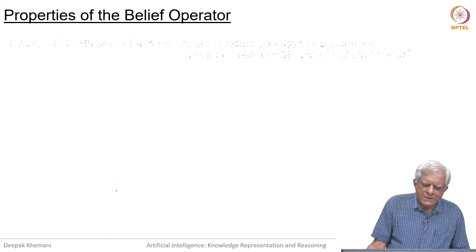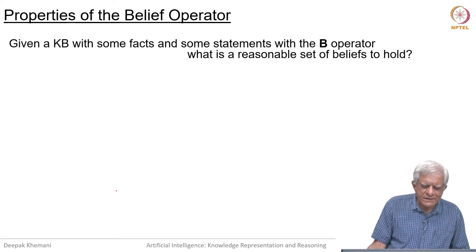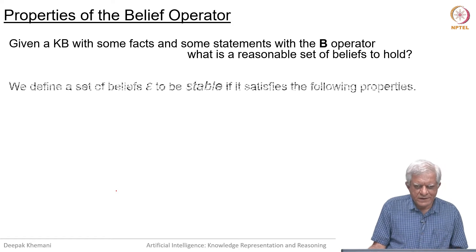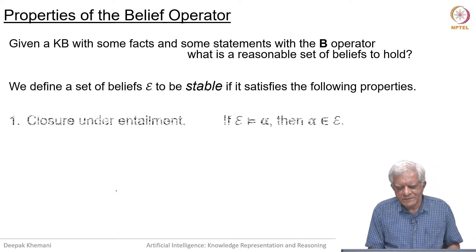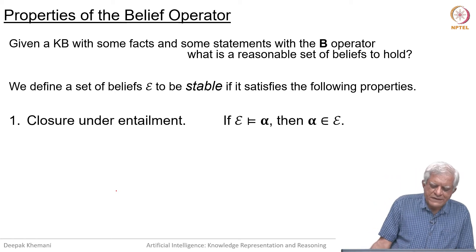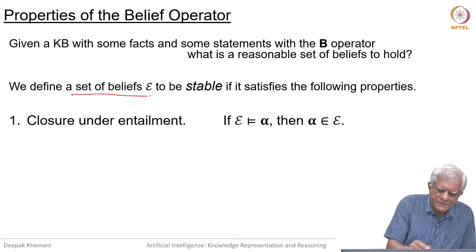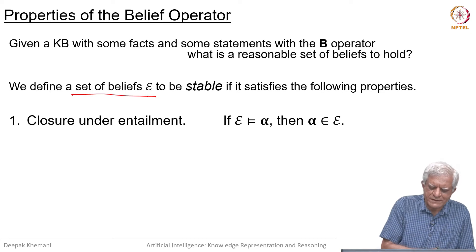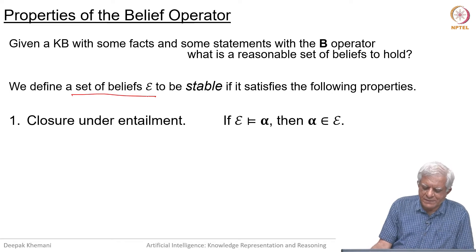This belief operator has certain properties that we should look at, and these properties will be useful in determining what is the reasonable set of beliefs that one can hold in a knowledge base where there are sentences with the belief operators. We can say that a set of beliefs epsilon — this community calls epsilon an expansion — is stable if it satisfies the following properties. One is closure under entailment.